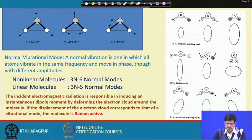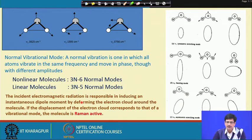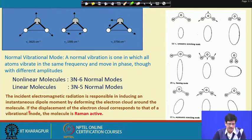Incident electromagnetic radiation is responsible for inducing an instantaneous dipole moment, represented by mu, by deforming the electron cloud around the molecule. If the displacement of the electron cloud corresponds to that of a vibrational mode, then that mode will be Raman active.